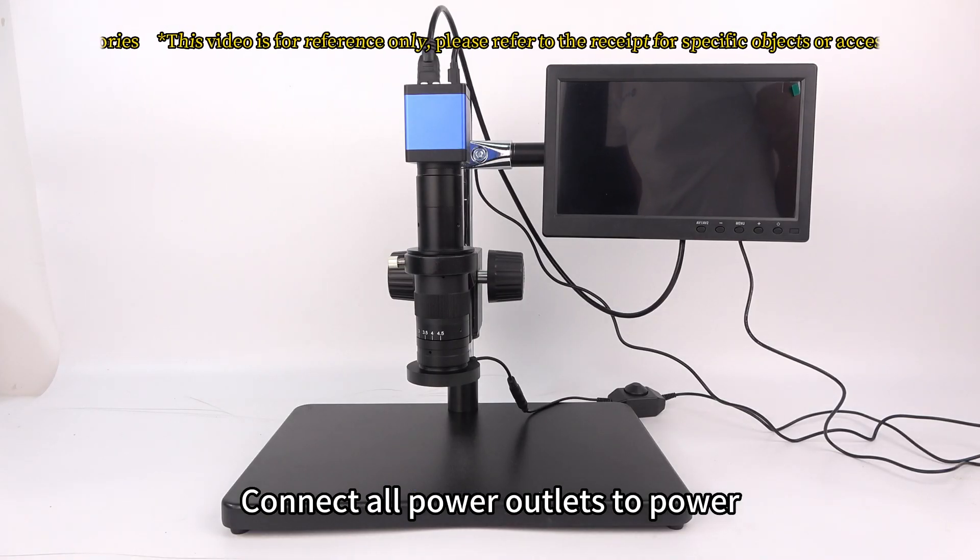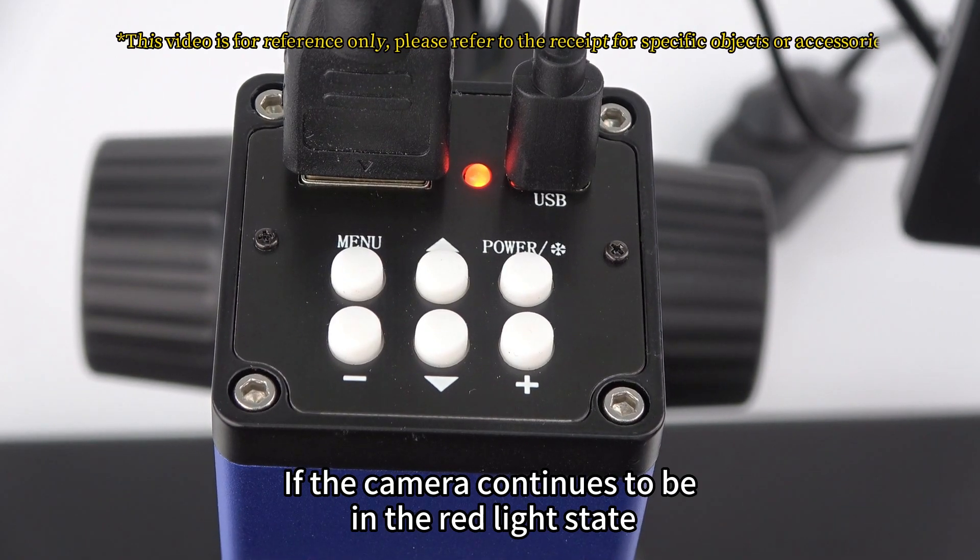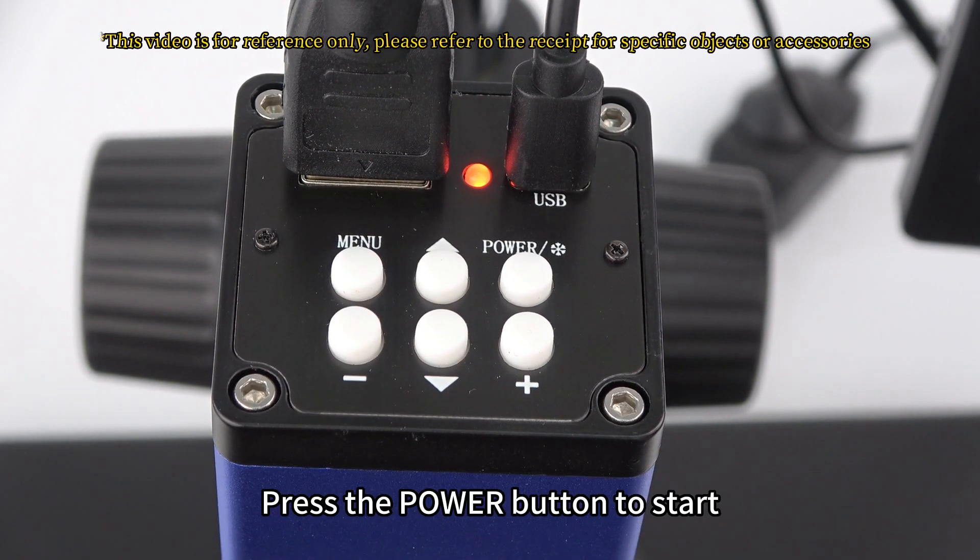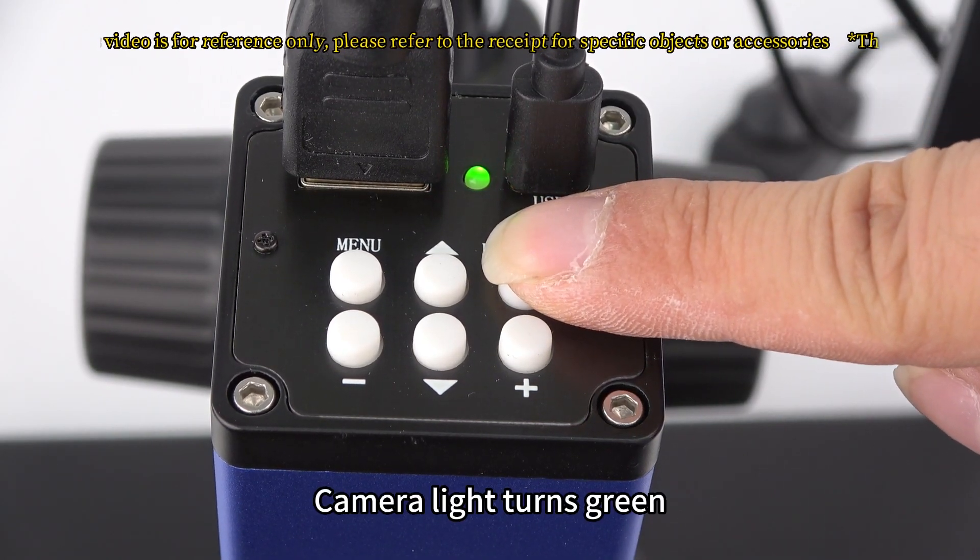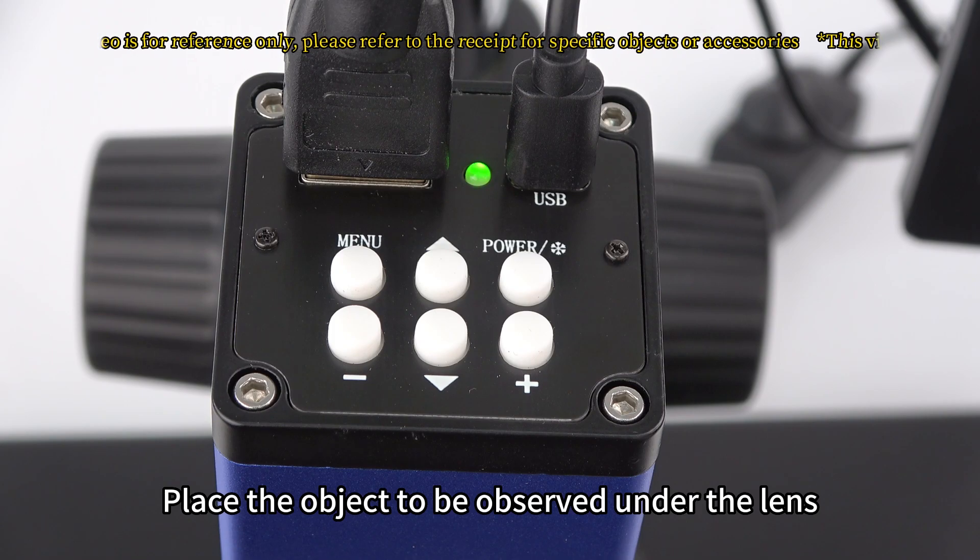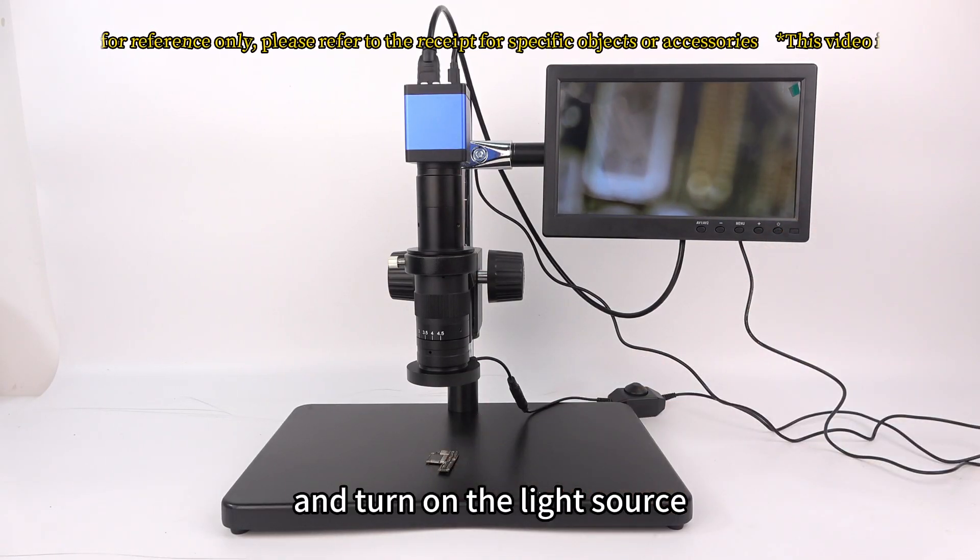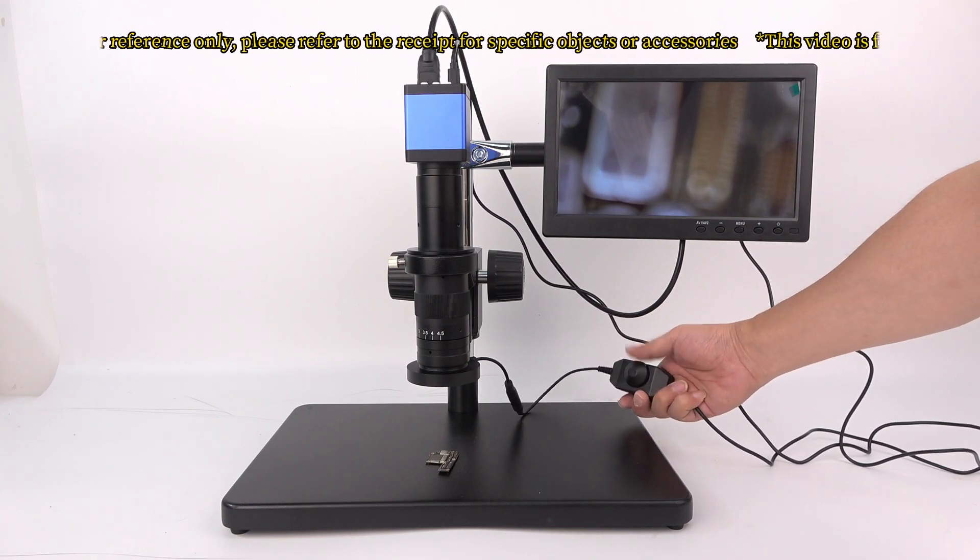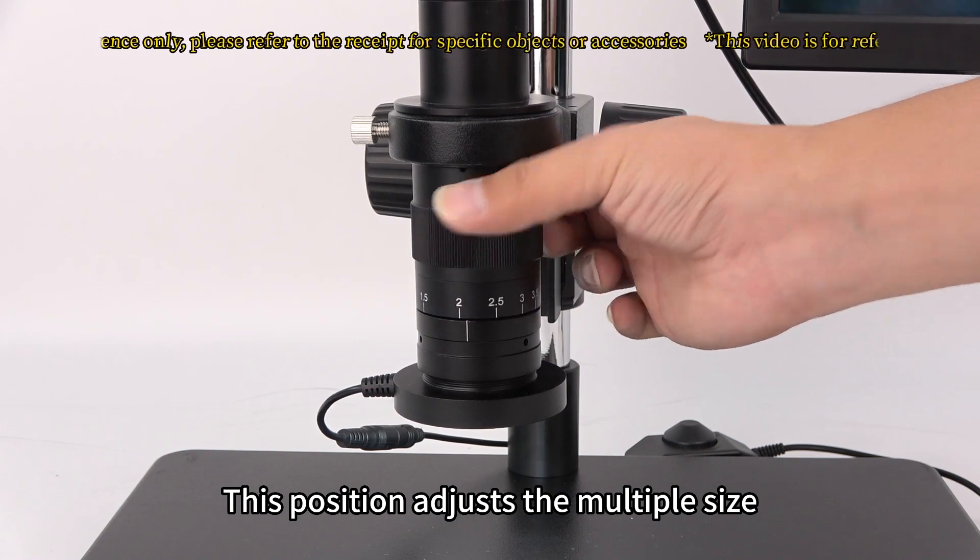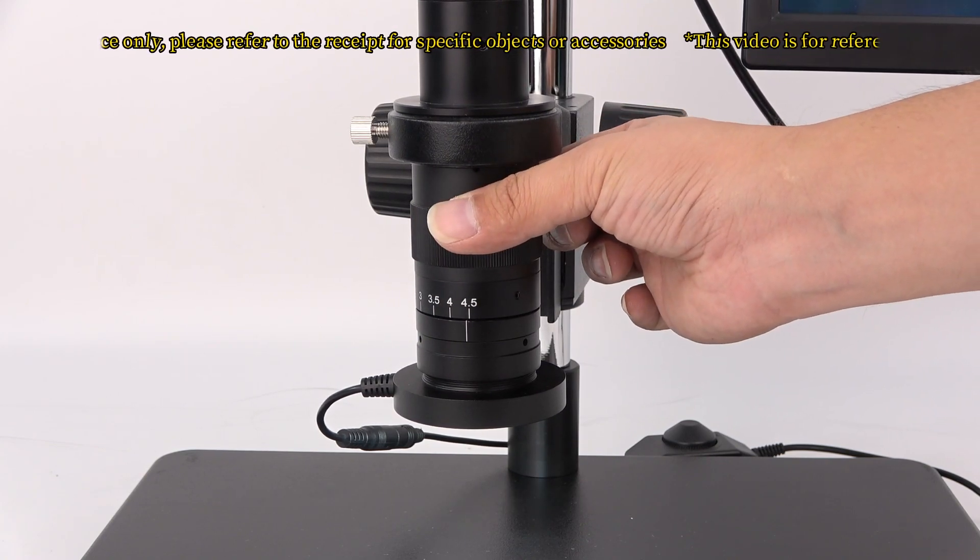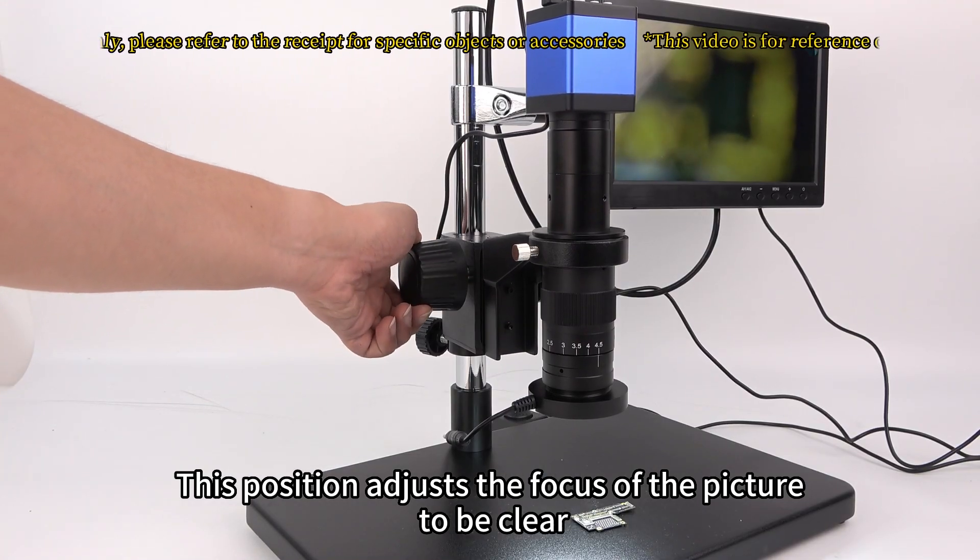Connect all power outlets to power. If the camera continues to be in the red light state, press the power button to start camera. Light turns green. Place the object to be observed under the lens and turn on the light source. This position adjusts the multiple size. This position adjusts the focus of the picture to be clear.